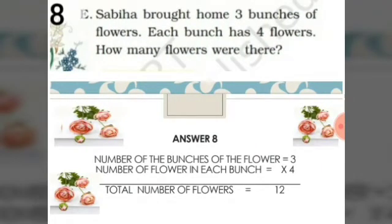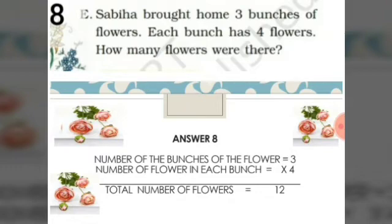Eighth sum: Sabiha bought home 3 bunches of flowers. Each bunch has 4 flowers. How many flowers were there? The number of bunches of flowers is 3 and the number of flowers in each bunch is 4. Can you see the bunches? 1, 2, 3 — 3 bunches of flowers, and the number of flowers in each single bunch is 4. So to find the total number of flowers, we multiply 3 into 4, which is equal to 12.